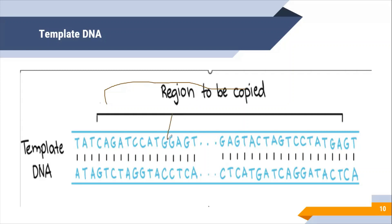Suppose this is the region that needs to be copied. In this region of DNA we have our gene of interest and we want to amplify this DNA. If we just have template DNA we can't do this, so we need further components.